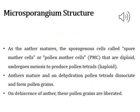The mature anther consists of sporogenous cells, also called spore mother cells or pollen mother cells (PMC). These cells are diploid in nature and undergo meiosis — a reductional division — to form pollen tetrads. Pollen tetrads are haploid in nature and help in the formation of pollen grains. These pollen grains are then involved in fertilization after the dehiscence or rupturing of the pollen sac.